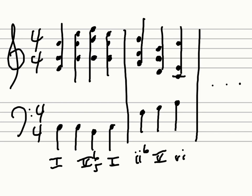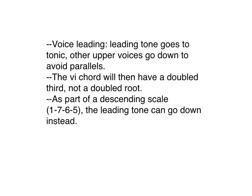The important voice leading thing is that the leading tone will still go to the tonic, but we can't take the G up to A and the D up to E in the same voices, because then we would have parallel fifths and parallel octaves with the bass going up a step. So even though the leading tone goes to tonic, this voice goes down and that voice goes down as well. The result for the sixth chord is that we have a root, a third, a fifth, and another third — an exception to our guideline that root position chords have doubled roots.